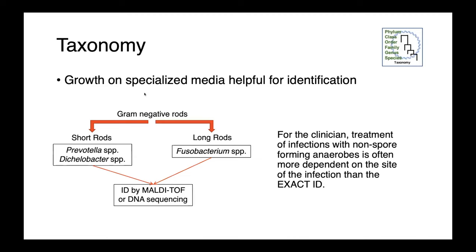When working with these organisms in the lab, growth on specialized media can be helpful for identification. For future clinicians, the most important thing is to know that you have a non-spore-forming anaerobe and the site of infection, as opposed to the exact ID, because that doesn't play into therapeutic selection as much as it does for other bacteria. Generally speaking, short gram-negative rods suggest Prevotella or Diclobacter, while long spindly gram-negative rods suggest Fusobacterium. These organisms can also be identified by MALDI-TOF or DNA sequencing.